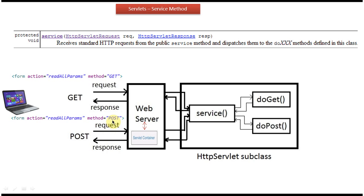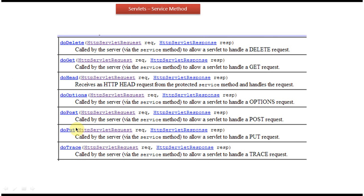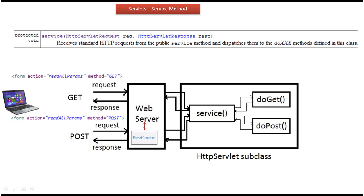These are the possible doMethods available in the HTTP Servlet class. Based on the method type, the corresponding doMethod will be called by the service method. In the service method you can see two parameters: one is the HttpServletRequest object and another is the HttpServletResponse object.